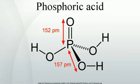Phosphoric acid can be prepared by three routes: the thermal process and the wet process, which includes two sub-methods. The wet process dominates in the commercial sector. The more expensive thermal process produces a purer product that is used for applications in the food industry.